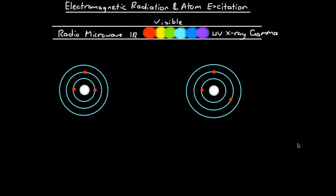So what is electromagnetic radiation? Electromagnetic radiation, or EMR, as it's often abbreviated to, is basically the label that we attach to lots and lots of different forms of radiation. So here we've got radio waves, microwaves, infrared waves, visible light waves, UV waves, X-ray waves, and gamma ray waves. So these are all types of electromagnetic radiation, and what they form part of is the electromagnetic spectrum.